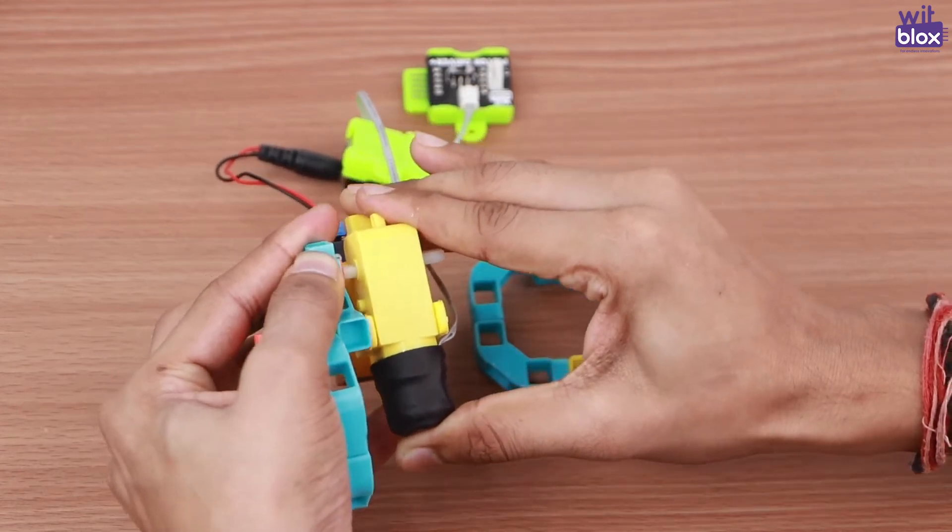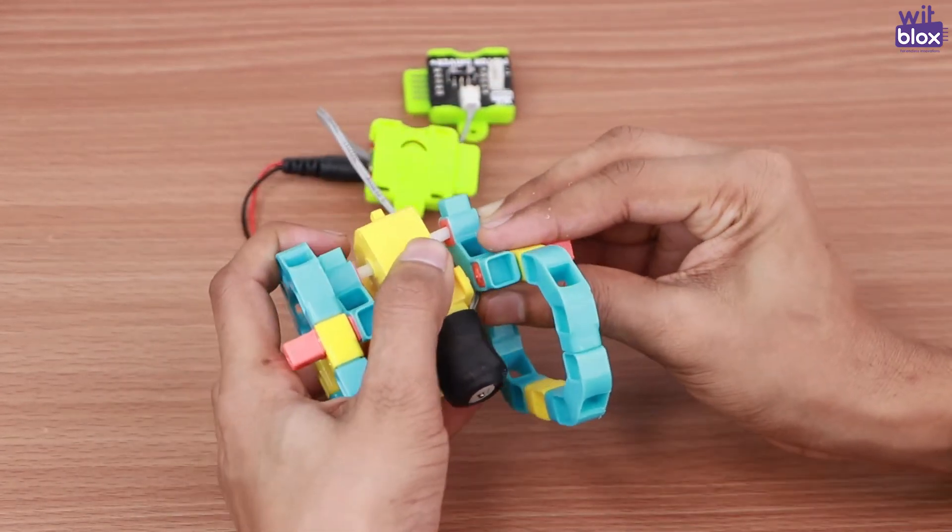Now let us attach the other end of the 90-degree 3-hole elbow to the yellow BO motor.